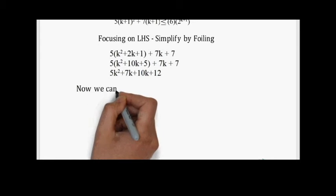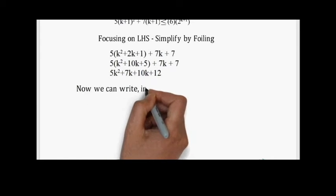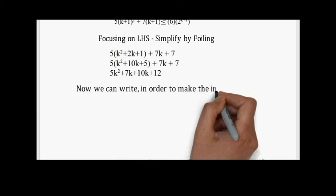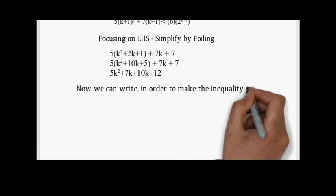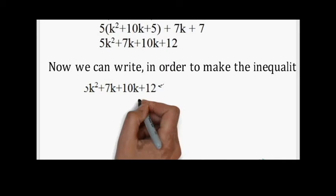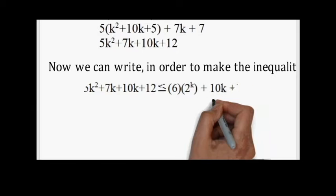Now, in order to make the inequality true, we will have to add 10k plus 12 to the right-hand side, leaving us with this equation.